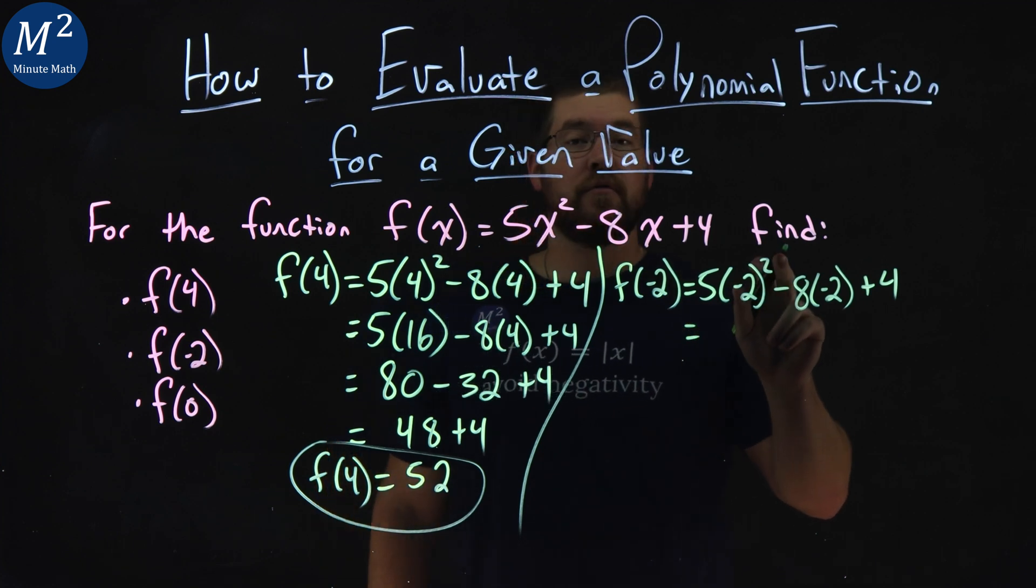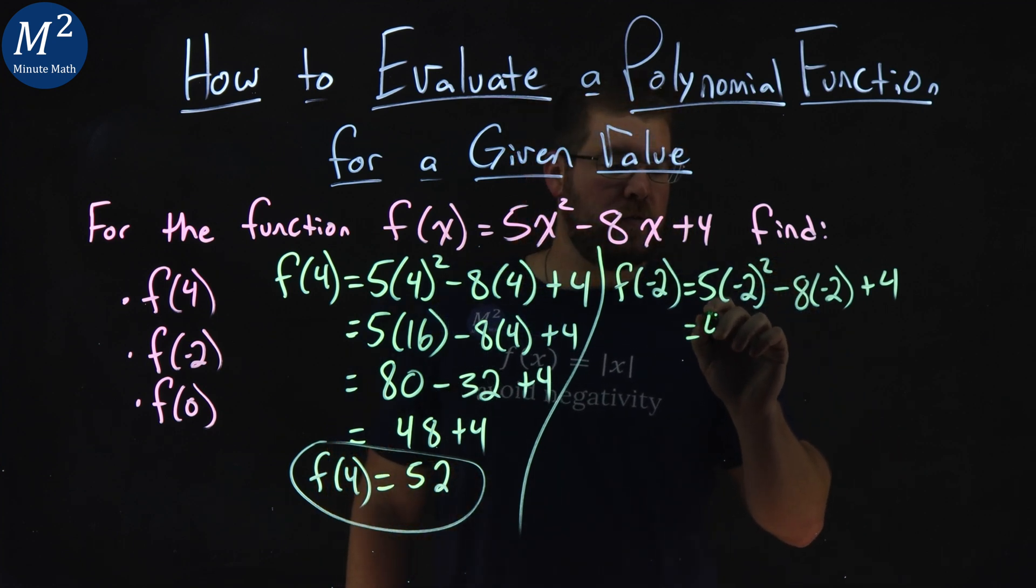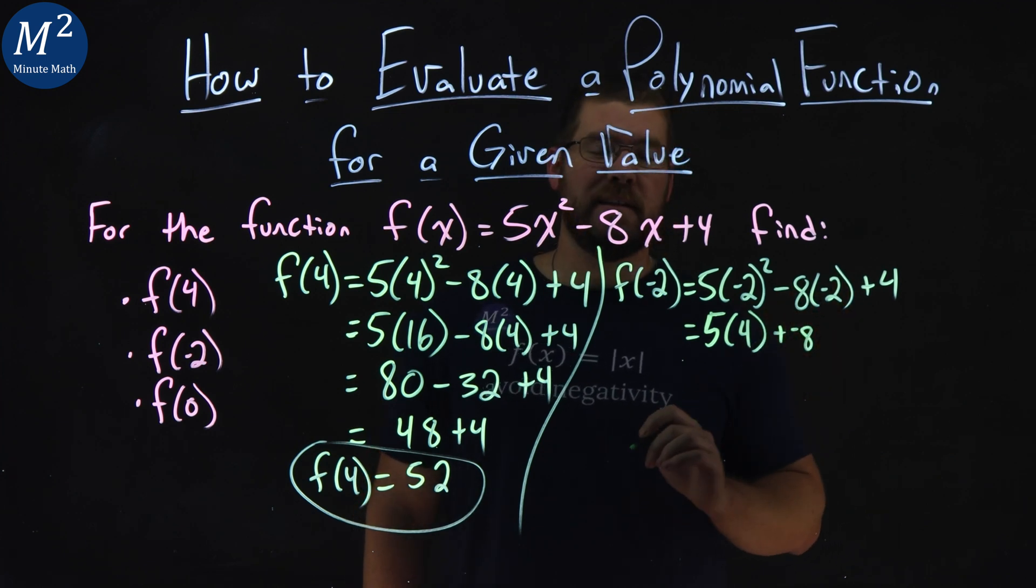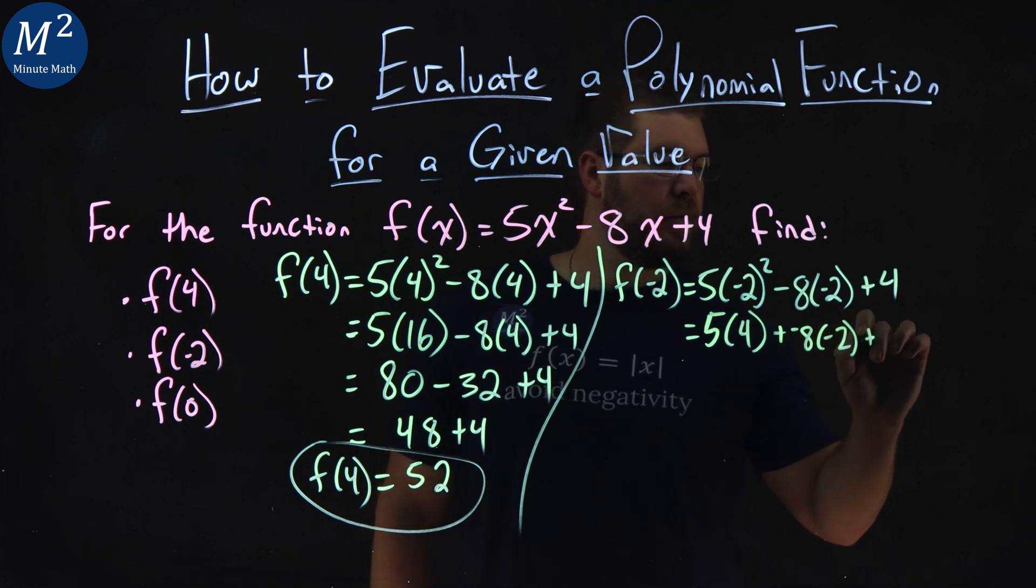From there, we want to simplify. -2 squared is a positive 4. So we have 5 times 4, minus, well, 8 times -2. We can distribute this to be plus -8. Makes it a little easier to see. -2 plus 4.